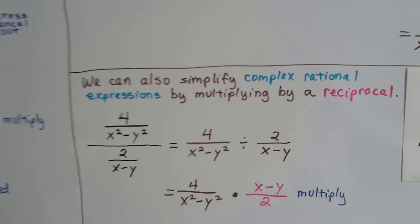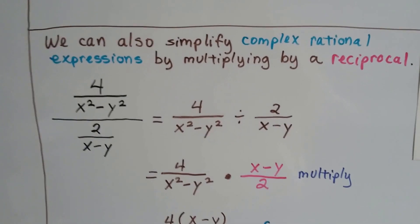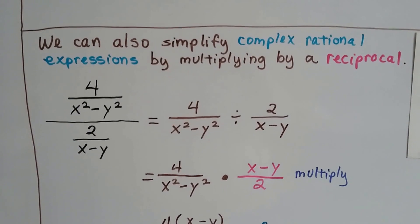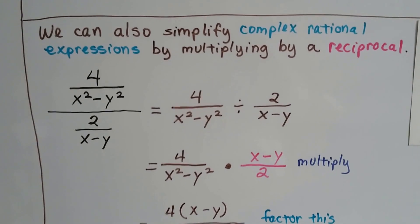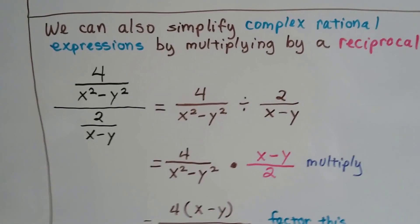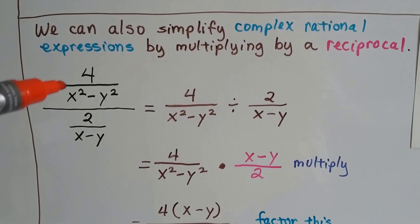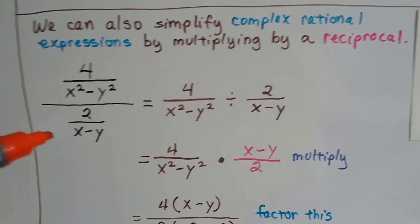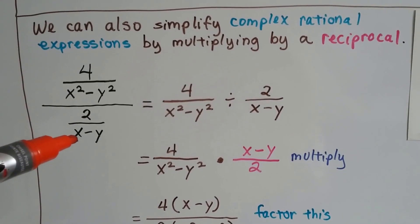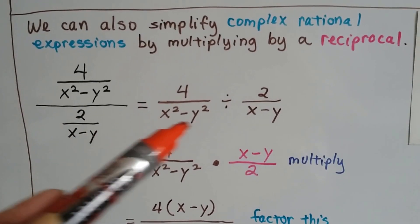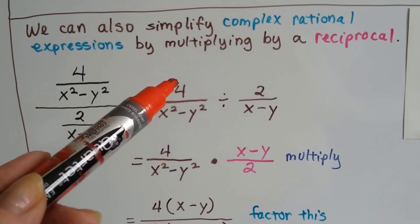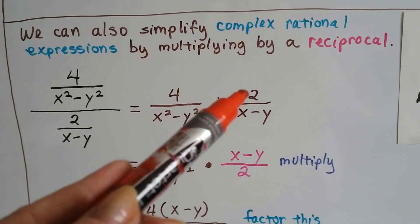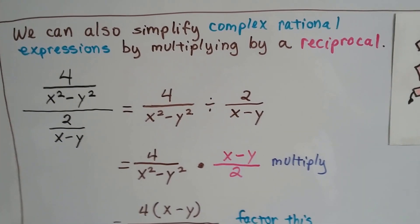We can also simplify complex rational expressions by multiplying by a reciprocal, just like we would when we were dividing regular fractions back in 4th and 5th grade. So, we can have a complex rational expression like 4 over x squared minus y squared, over 2 over x minus y. And all it means is we're dividing them — 4 over x squared minus y squared is being divided by 2 over x minus y.